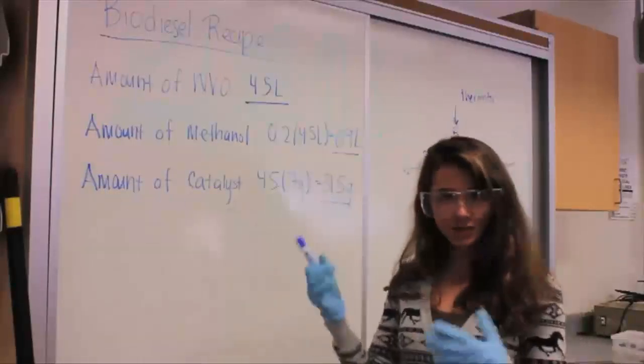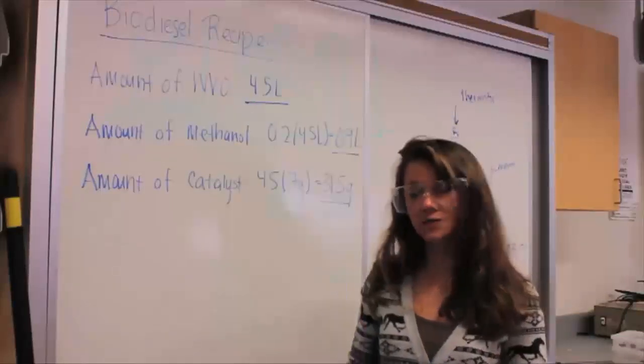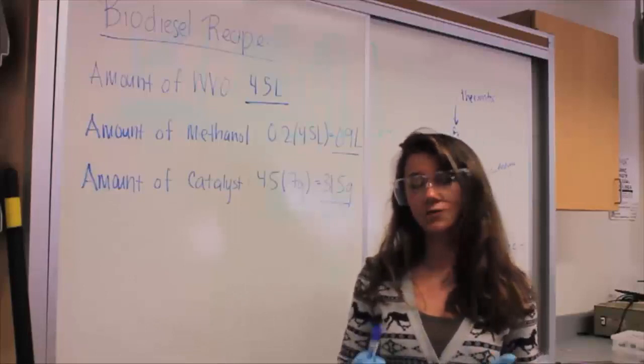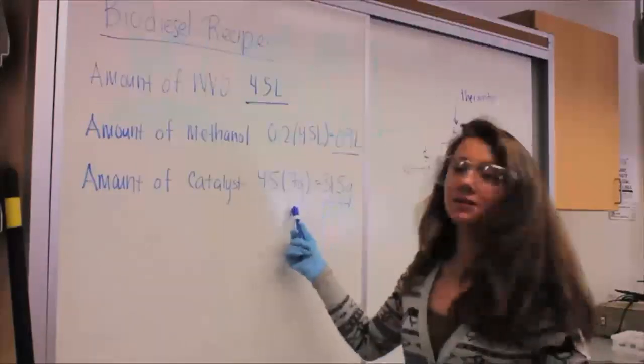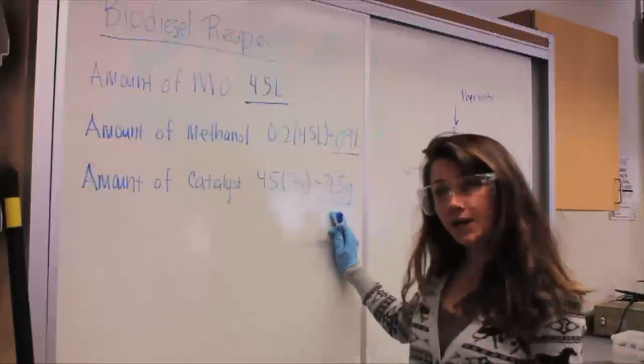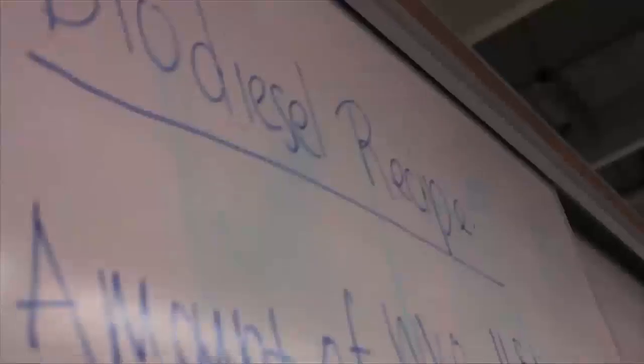You also need a catalyst, and this is just a general recipe for any type of waste vegetable oil. We're using just general waste vegetable oil that has not been used for cooking. Therefore, we need 7 grams per liter of the waste vegetable oil that we're using. So we'll need 31.5 grams of KOH, which is our catalyst.